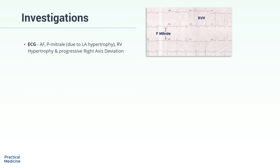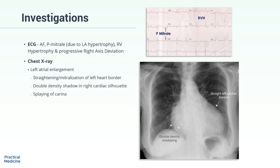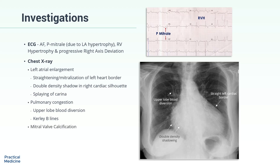Investigations: ECG may show AF, P-mitrale due to left atrial hypertrophy, features of right ventricular hypertrophy, and progressive right axis deviation. Chest X-ray may show typical features of mitral stenosis, including left atrial enlargement leading to straightening or mitralization of the left heart border. You may also see a double-density shadow in the right cardiac silhouette and splaying of the carina due to left atrial enlargement. There may be pulmonary congestion evident by upper lobe blood diversion and Kerley B lines. Mitral calcification can sometimes also be seen on X-ray. In advanced cases, there may also be findings consistent with pulmonary hemosiderosis.